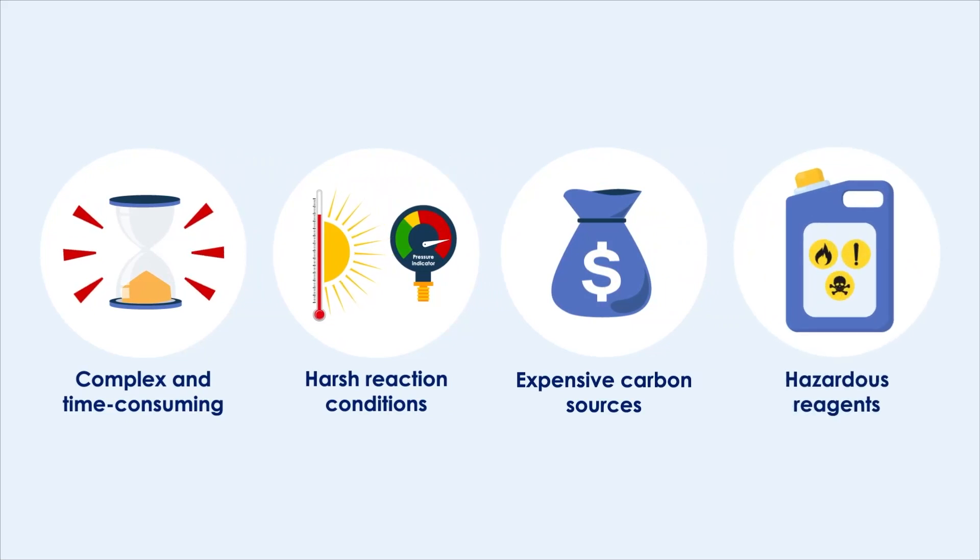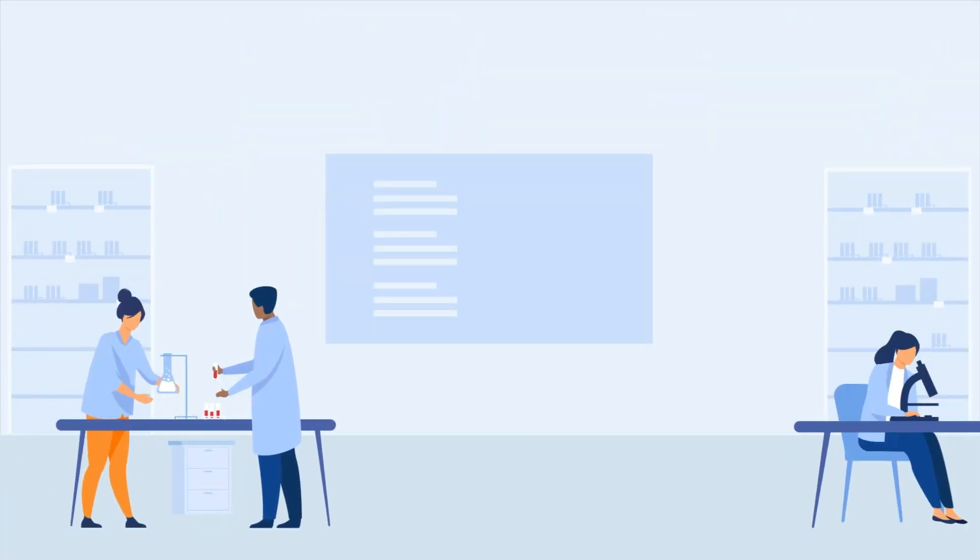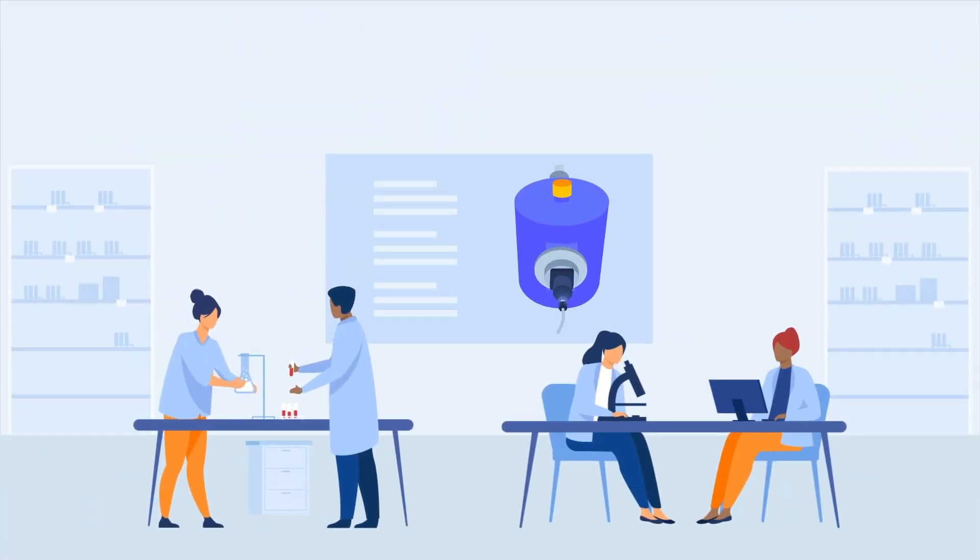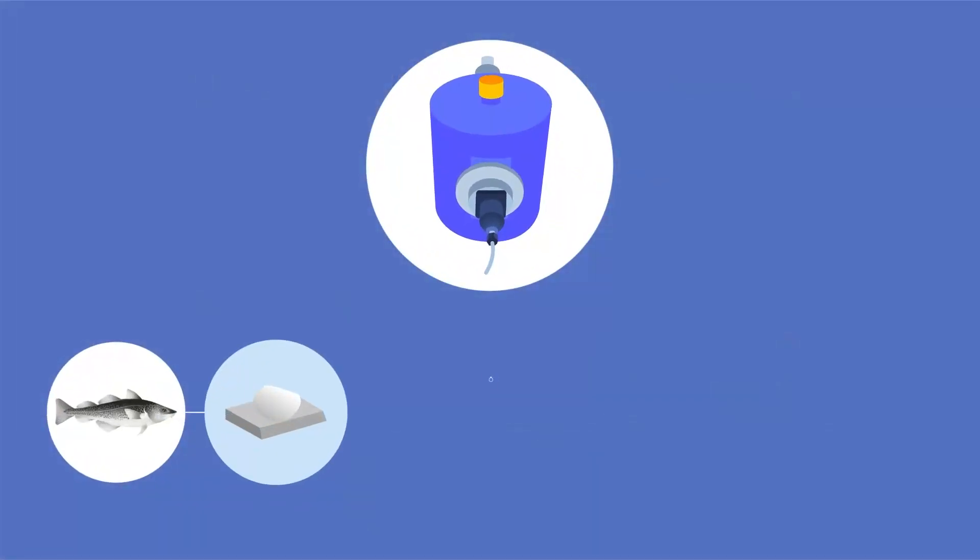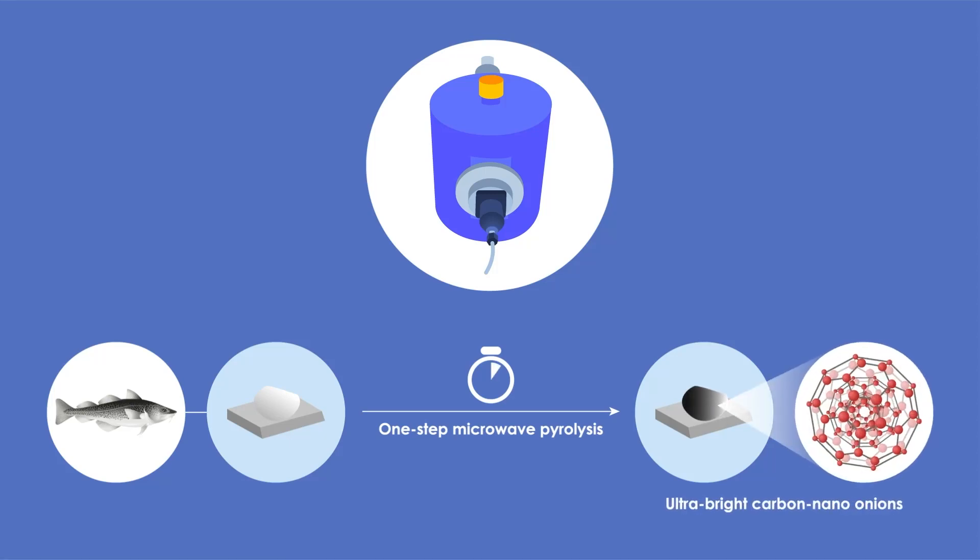A simpler procedure was needed, so a team of researchers from Nagoya Institute of Technology, Japan, developed a one-step microwave pyrolysis method that can synthesize ultra-bright carbon nano-onions from fish scales within 10 seconds.